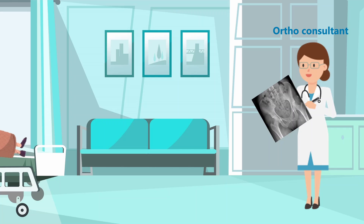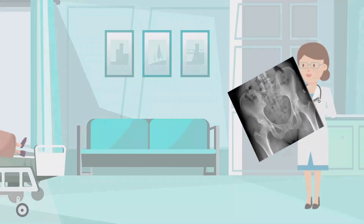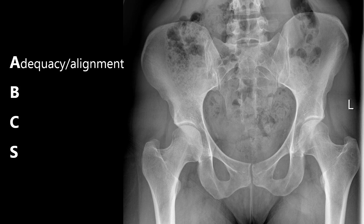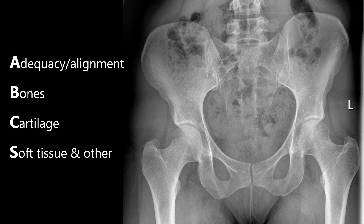The structure we use to interpret hip x-rays is ABCs. This stands for adequacy and alignment, bones, cartilage and soft tissues and other.